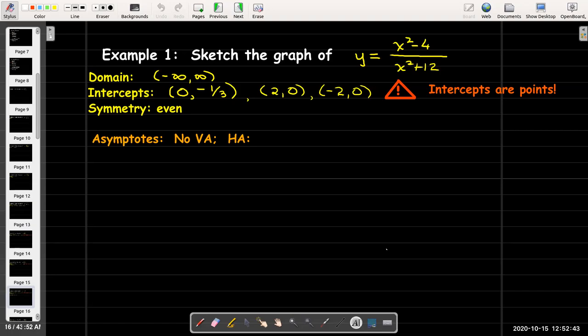For the asymptotes, there's no vertical asymptotes. There's no way I can have a vertical asymptote because the denominator can never be zero.